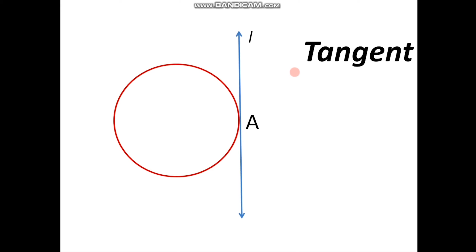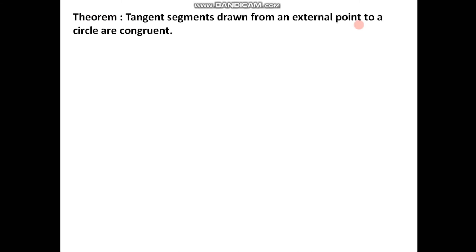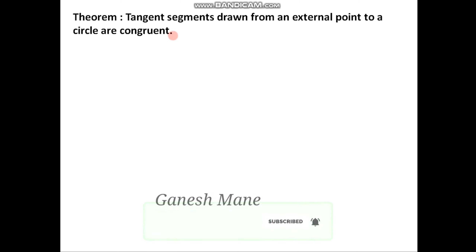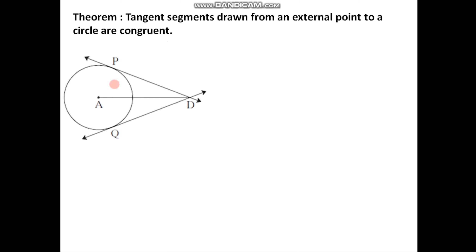Now knowing the definition of a tangent of a circle, let's move to our theorem: tangent segments drawn from an external point to a circle are congruent. We need to prove this, and for this we need a diagram.